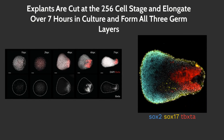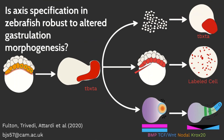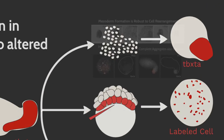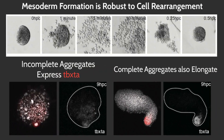We wanted to test whether pre-patterning from the yolk prior to explanting of the blastomeres was regulating the elongation and germ layer formation. To do this, we cut pescoids as normal, dissociate them to generate a pool of single cells, and then carefully re-aggregate these cells by sweeping them together and monitoring them under a microscope.